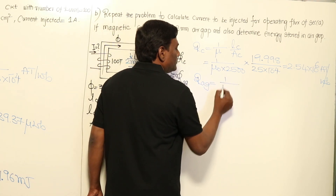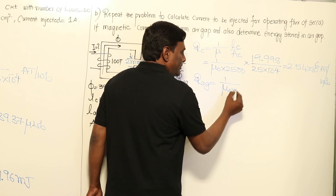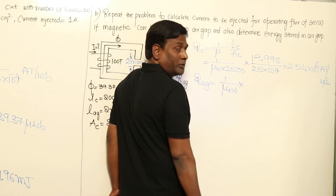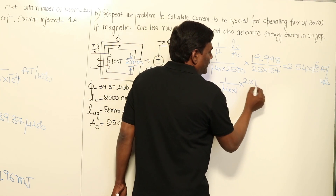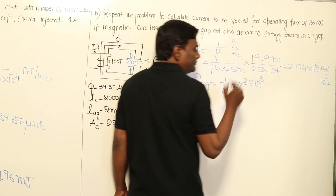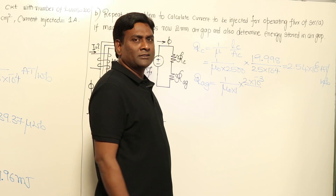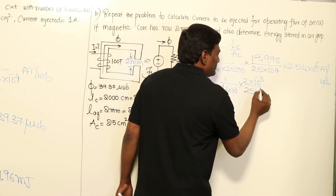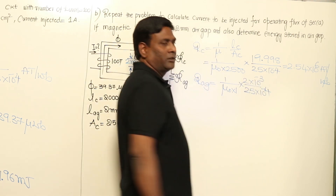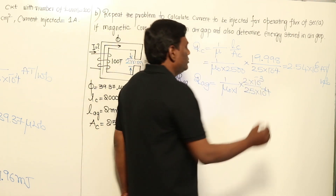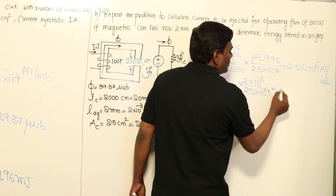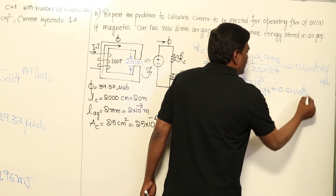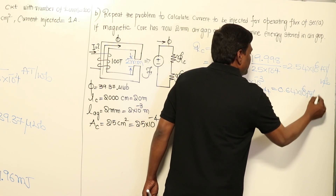Now let me calculate reluctance of the air gap. For the air gap, relative permeability = 1, so reluctance of air gap = 1/μ₀ × l_gap / A = 2 × 10⁻³ meters divided by the same cross-section area. This comes to 0.64 × 10⁶ ampere turns per weber.